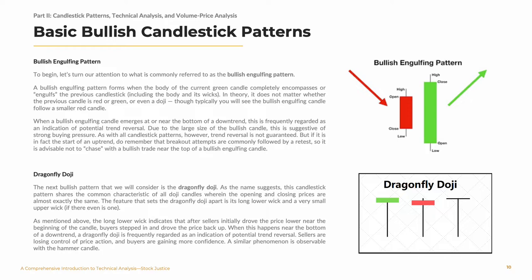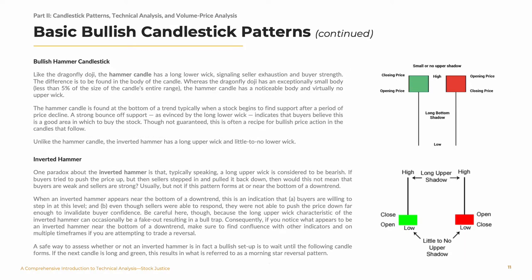A similar phenomenon is observable with the hammer candle. Like the dragonfly doji, the hammer candle has a long lower wick, signaling seller exhaustion and buyer strength. The difference is to be found in the body of the candle. Whereas the dragonfly doji has an exceptionally small body — less than 5% of the size of the candle's entire range — the hammer candle has a noticeable body and virtually no upper wick. The hammer candle is found at the bottom of a trend, typically when a stock begins to find support after a period of price decline. A strong bounce off of support, as evidenced by the long lower wick, indicates that buyers believe this is a good area in which to buy the stock. Though not guaranteed, this is often a recipe for bullish price action in the candles that follow.